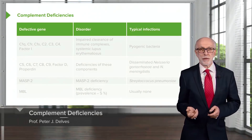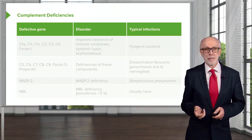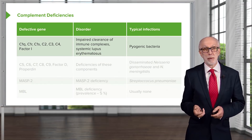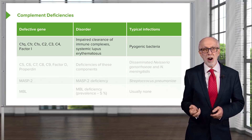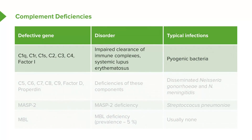Looking at complement deficiencies, any one of the many different complement components can be affected. For example, if there is a defective gene encoding the complement components C1Q, C1R, C1S, C2, C3, C4 or factor I, there will be impaired clearance of immune complexes. This can result in systemic lupus erythematosus, which is an autoimmune disease. Typical infections seen with deficiency of these complement components include a number of pyogenic bacteria.